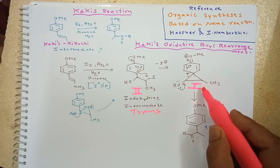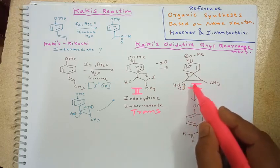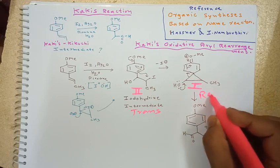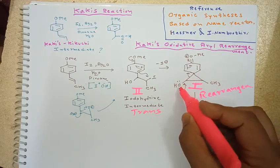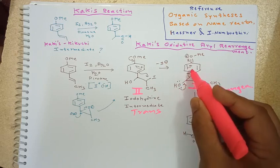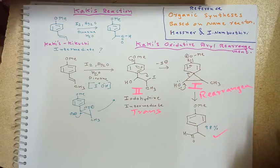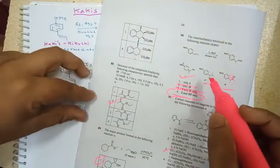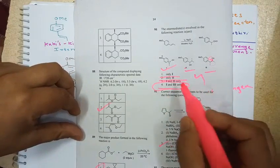This is the main rearrangement step. Here, these electrons push here, this will again go back to the ring, and you get this product. The intermediates involved are the second one and first one, so the right option is third, not fourth.